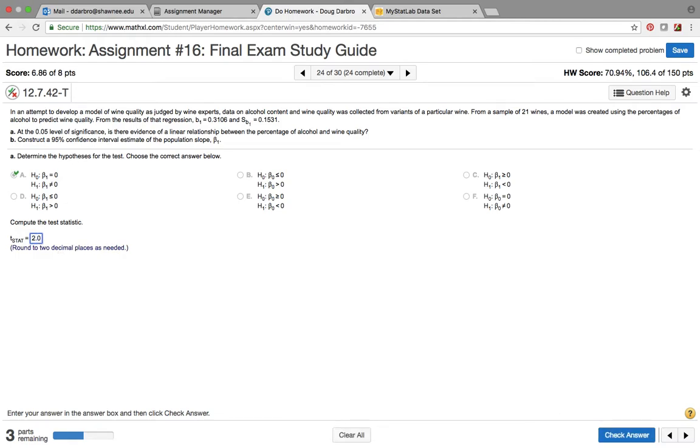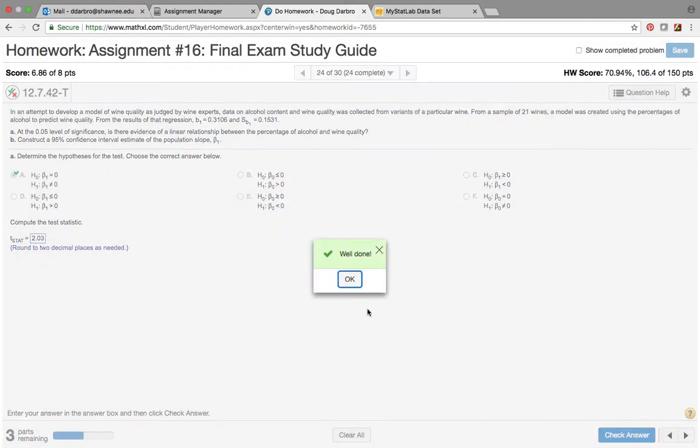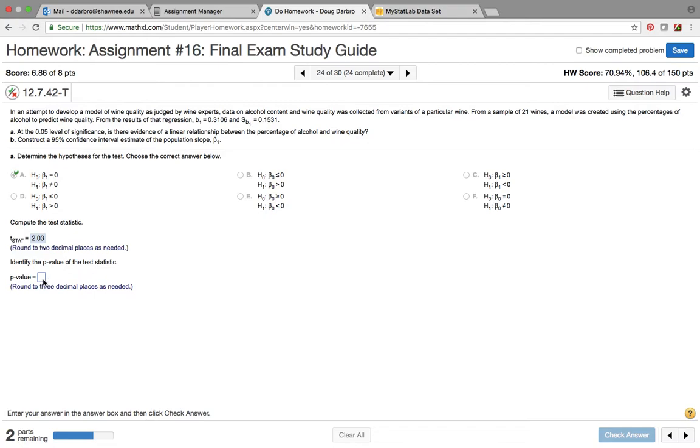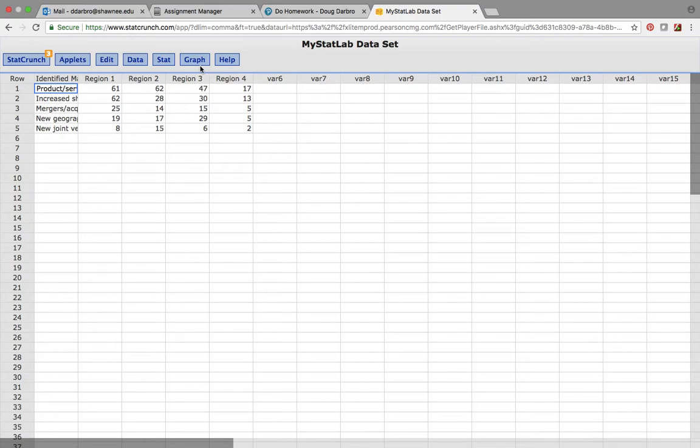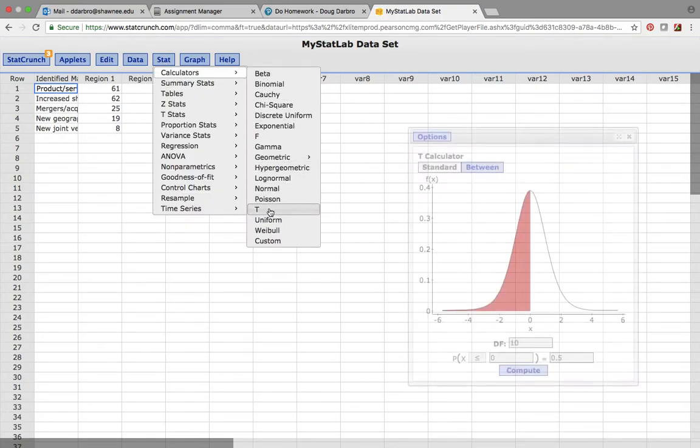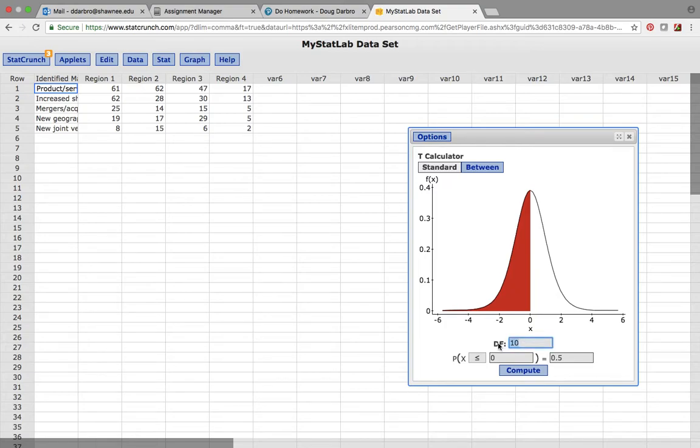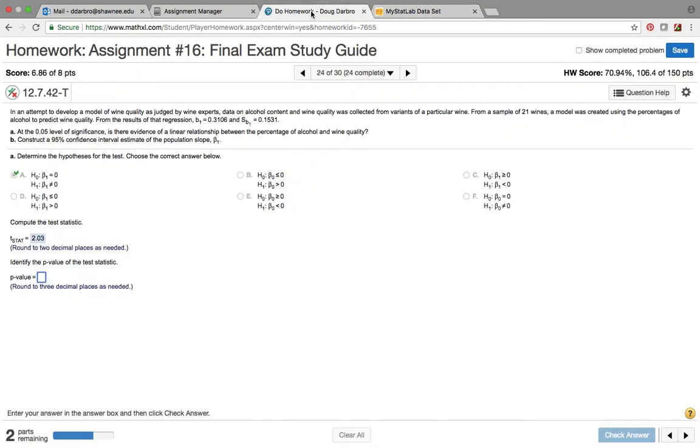The next thing is to identify the p-value. So we have degrees of freedom 19; degrees of freedom are n minus two. So to calculate the p-value we'd want to go from 2.03. So again, degrees of freedom are 19, so I want to go stat calculator t.